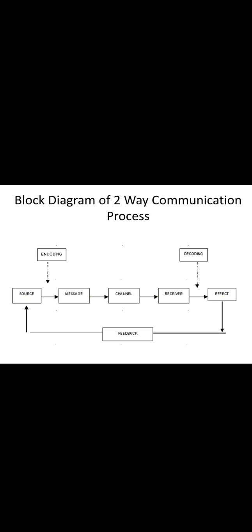Let's look at the diagrammatic representation of the entire communication process — the block diagram. The sender encodes the message and selects the channel, the receiver receives the message through the right channel, decodes it, understands it, and sends feedback back to the sender. Noise can feature at all steps — it's not just physical noise but any kind of obstacle or disturbance at any stage of the communication process.